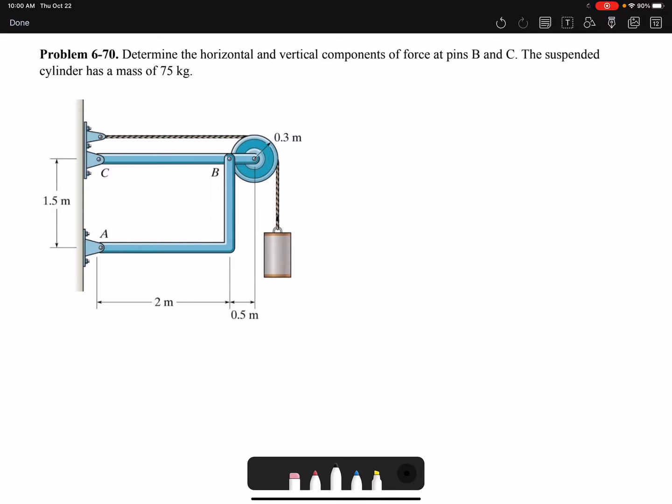Hello everyone, in this video I'm going to solve problem 70 of chapter 6. Determine the horizontal and vertical components of force at pins B and C. The suspended cylinder has a mass of 75 kg.